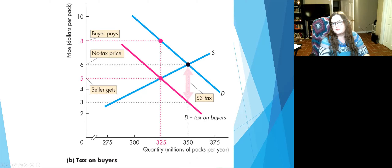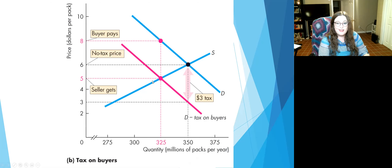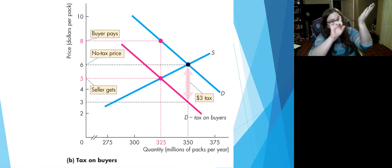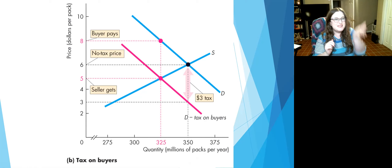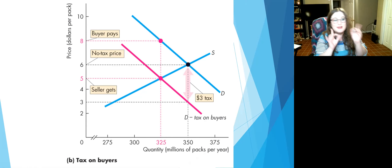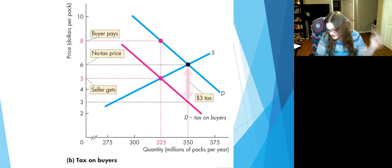We have a reduction in consumer surplus and producer surplus. Looking at prices: the original equilibrium is $6, and in the new equilibrium for the new demand curve the price is $5. That means $5 goes to the seller. Now the buyer pays $5 for the pack plus the $3 tax, so they're really paying $8 at the register. Whether prices go up and the seller pays the government, or prices go down and the buyer pays a big tax at the register — either way, whether you put this on the seller or the buyer, the buyer pays $8 and the seller gets $5.